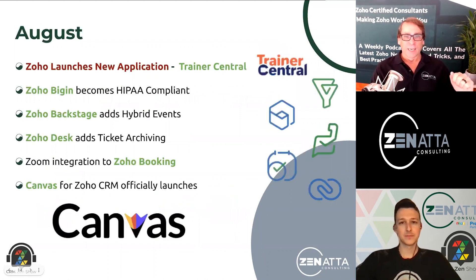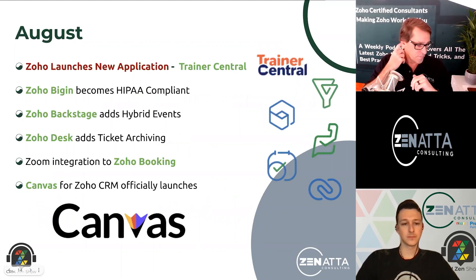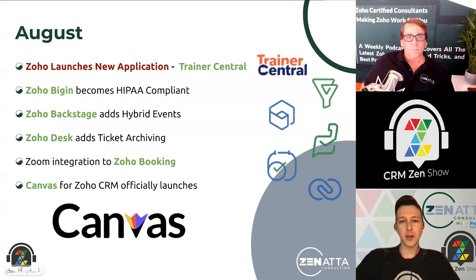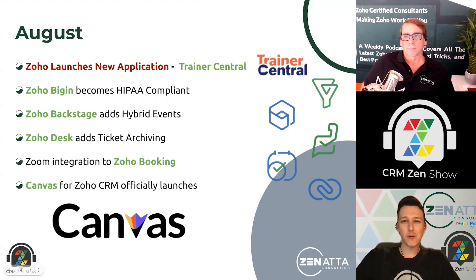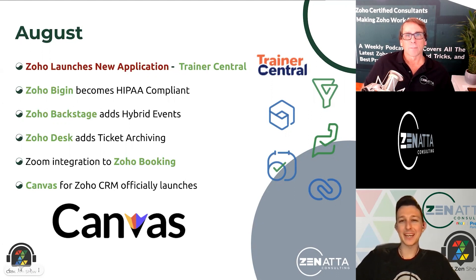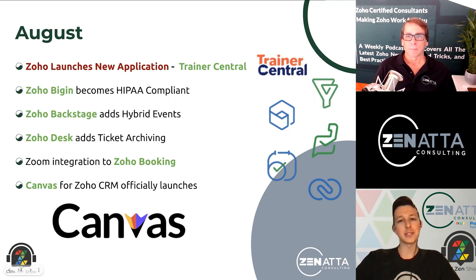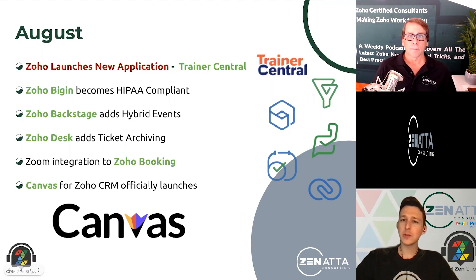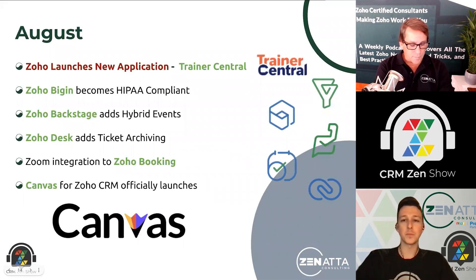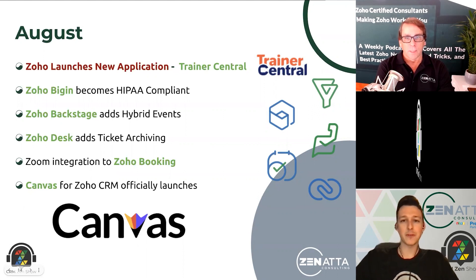Moving on to August — so much to talk about here. Zoho launched an application called Trainer Central. This was their application formerly known as Showtime — a webinar platform. By moving it to Trainer Central and launching it as a separate brand, they basically turned it into an external LMS and training tool: you can load in courses, content, and live sessions, and sell and monetize courses through it. Even when it was in preview mode it was really cool — it's basically got the same LMS as Zoho Learn plus the presentation tool of Showtime.